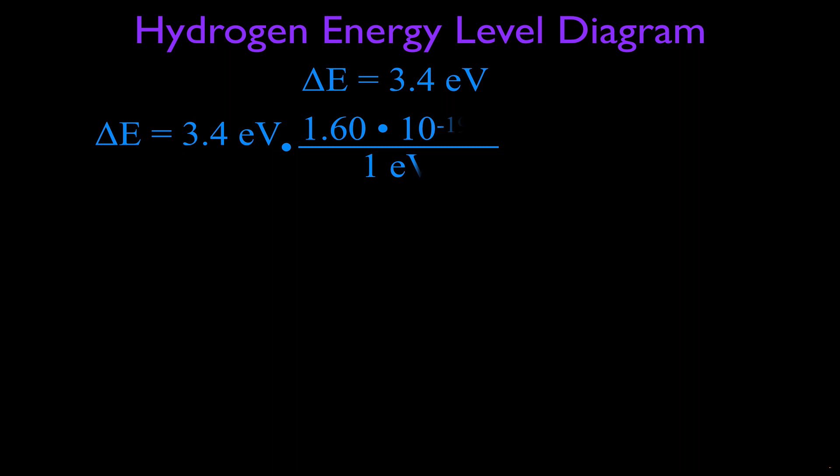We know one electron volt is 1.60 times 10 to the -19 joules. So our electron volts will cancel, we have one on the top and one on the bottom, and we're left with joules, and that's the energy that corresponds to the energy in joules, that is the equivalent energy in electron volts, because those are both units for energy, is 5.44 times 10 to the -19 joules.